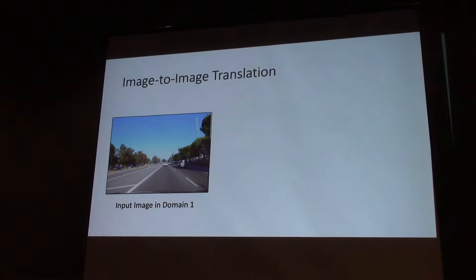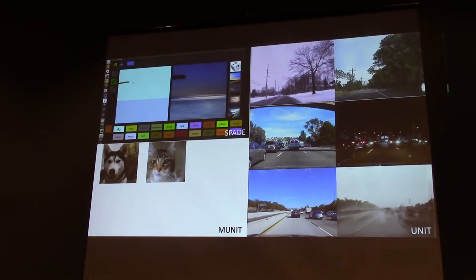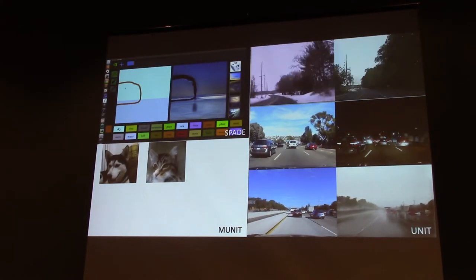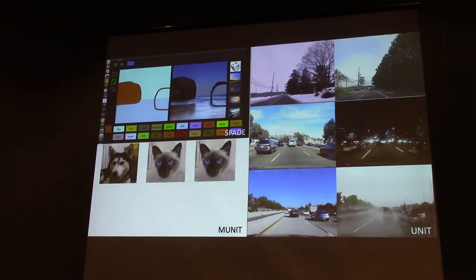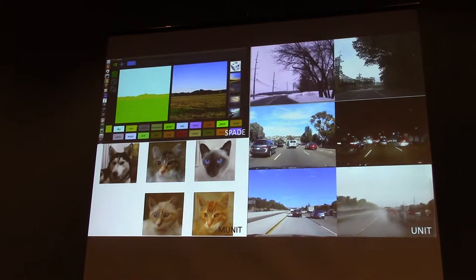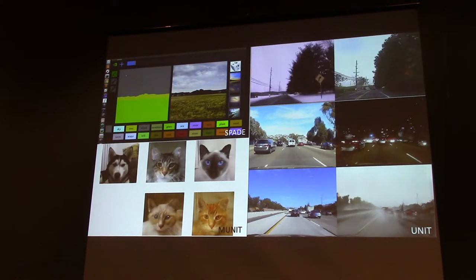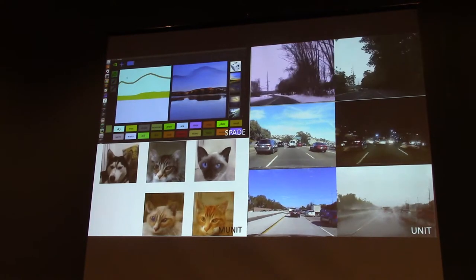This task considers learning a function to map an input image in one domain to a corresponding image in another domain — for example, a sunny day to a rainy day. This problem has received increasing attention over the last few years, and there are many different methods. These are some of the results achieved so far, and the top result is the state-of-the-art algorithm.